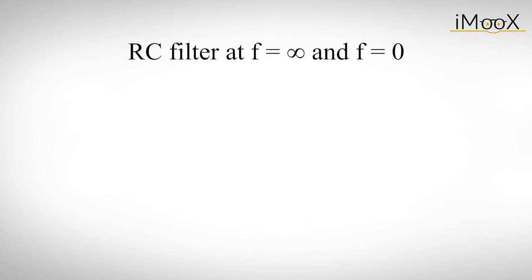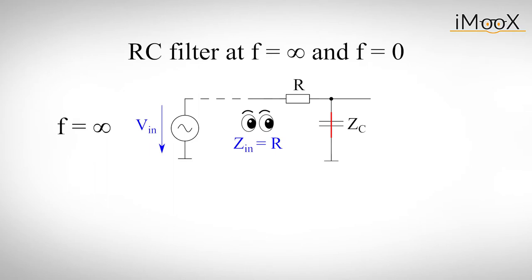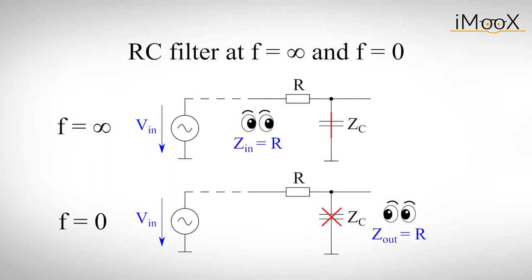It's easy if we think of the worst case for both, that is minimum input impedance and maximum output impedance. In order to do this we look at the two extremes regarding the input signal frequency. In both cases the influence of the capacitor vanishes, either because it behaves like a short or like an open circuit. The answer to the question, what's the worst case input and output impedance, is therefore astonishingly simple. It's R for both cases.